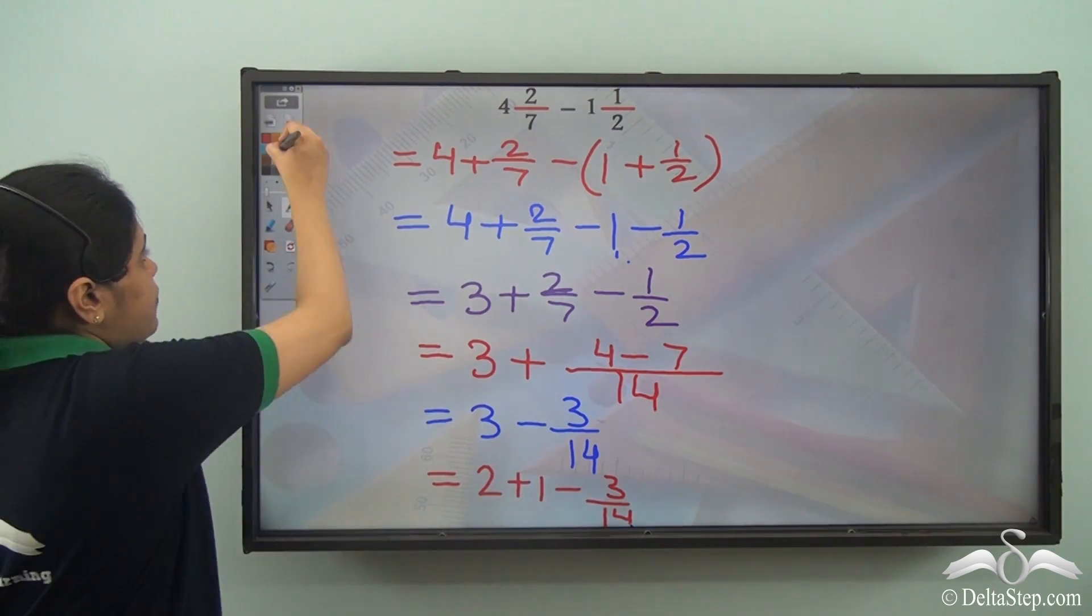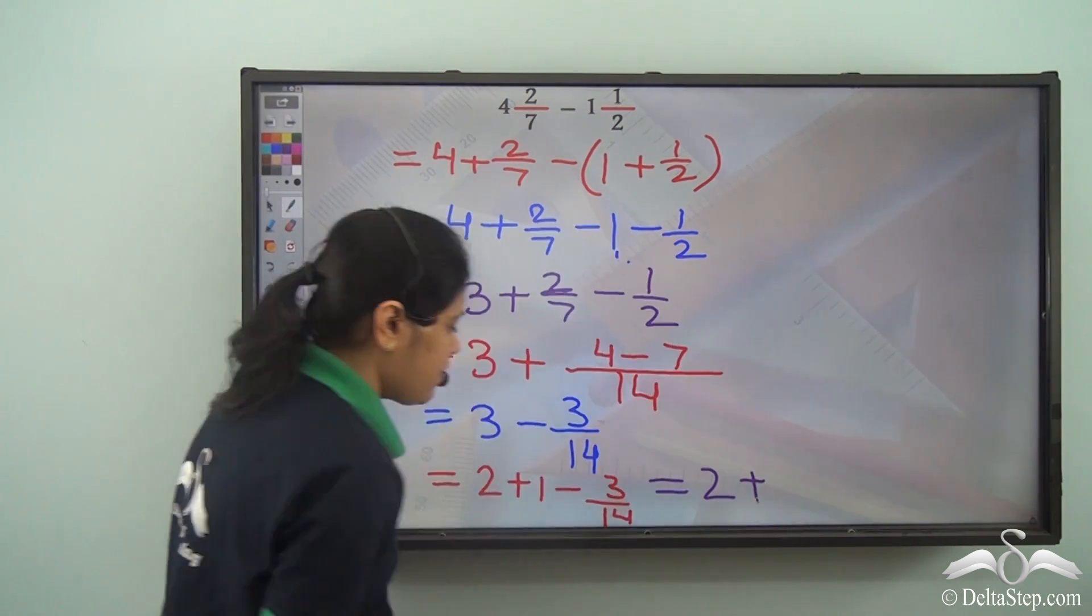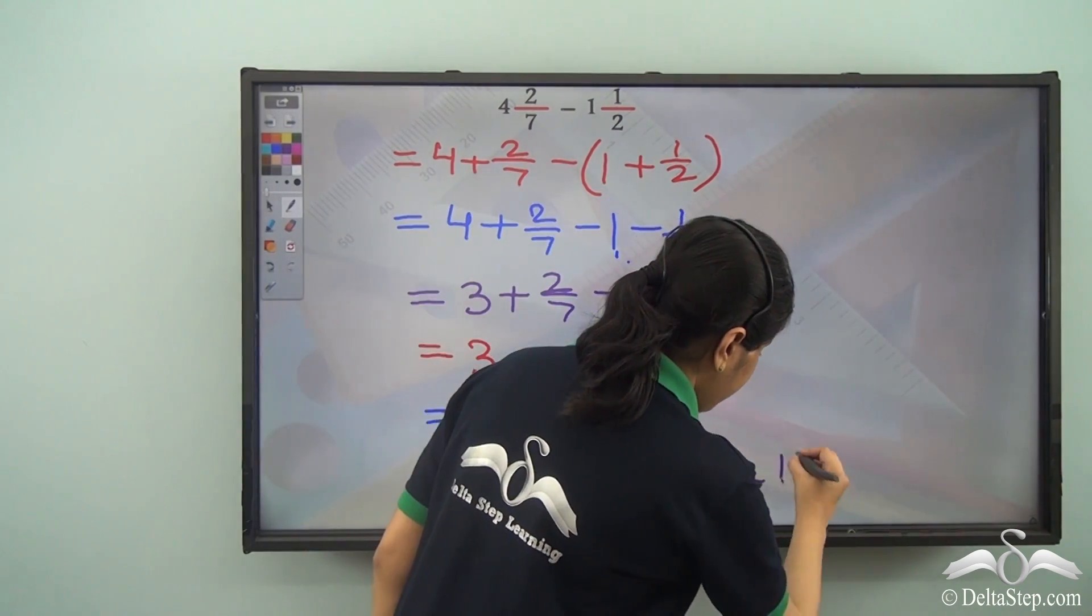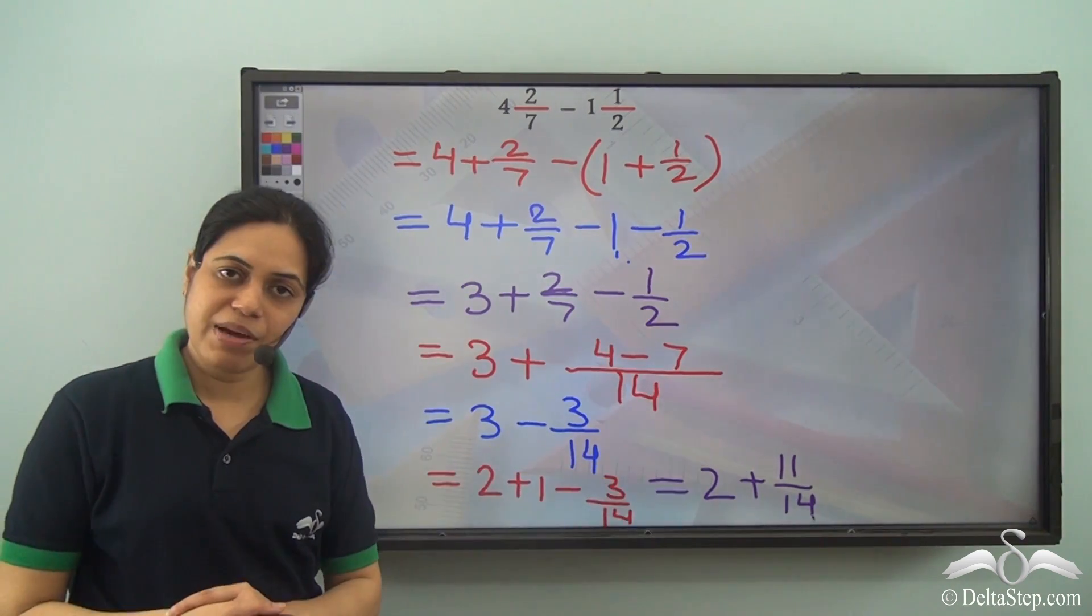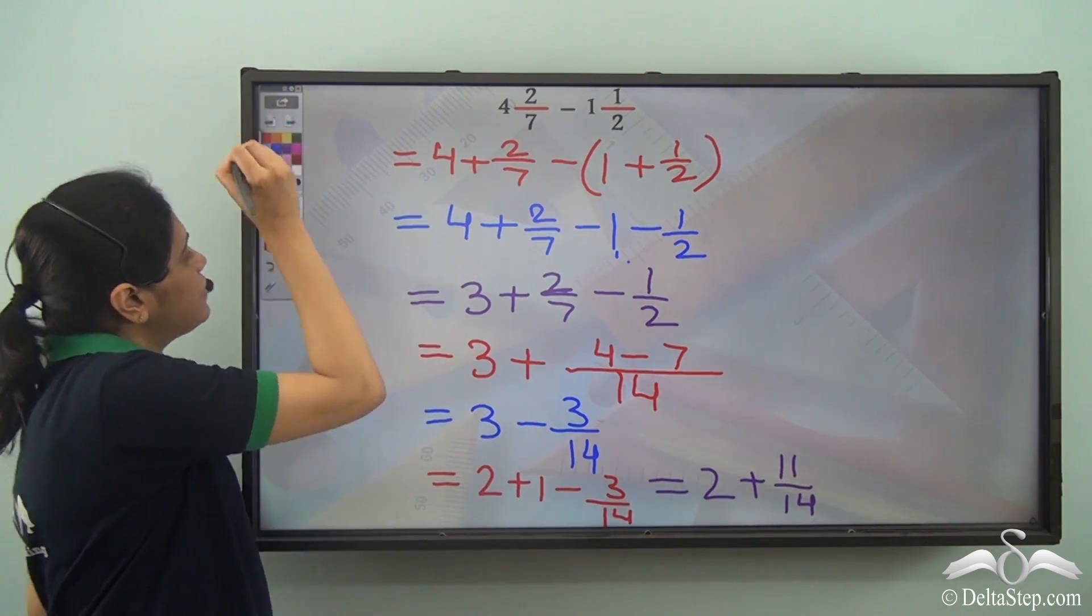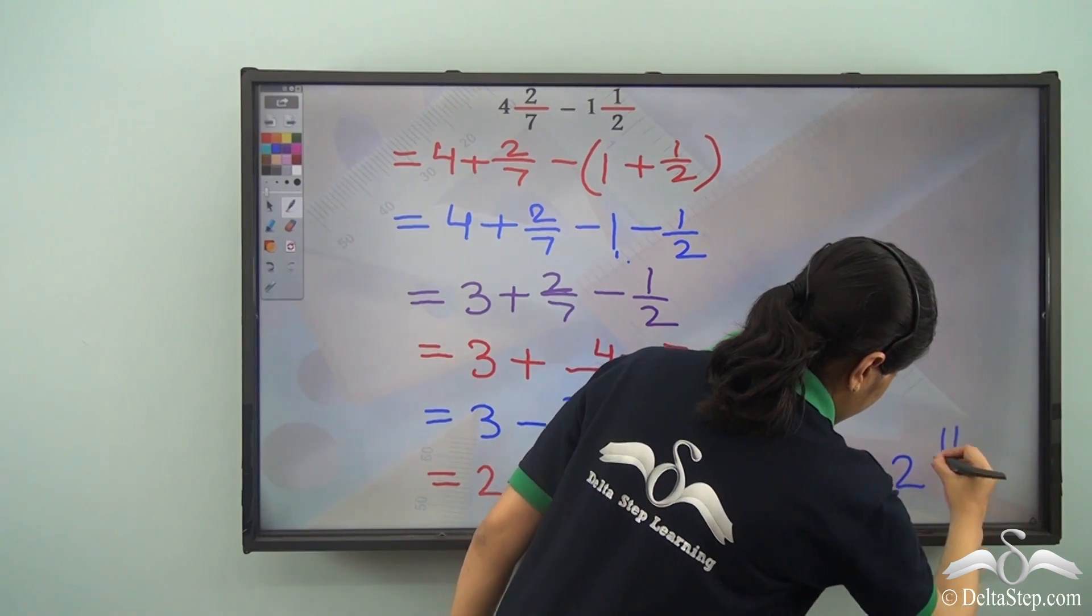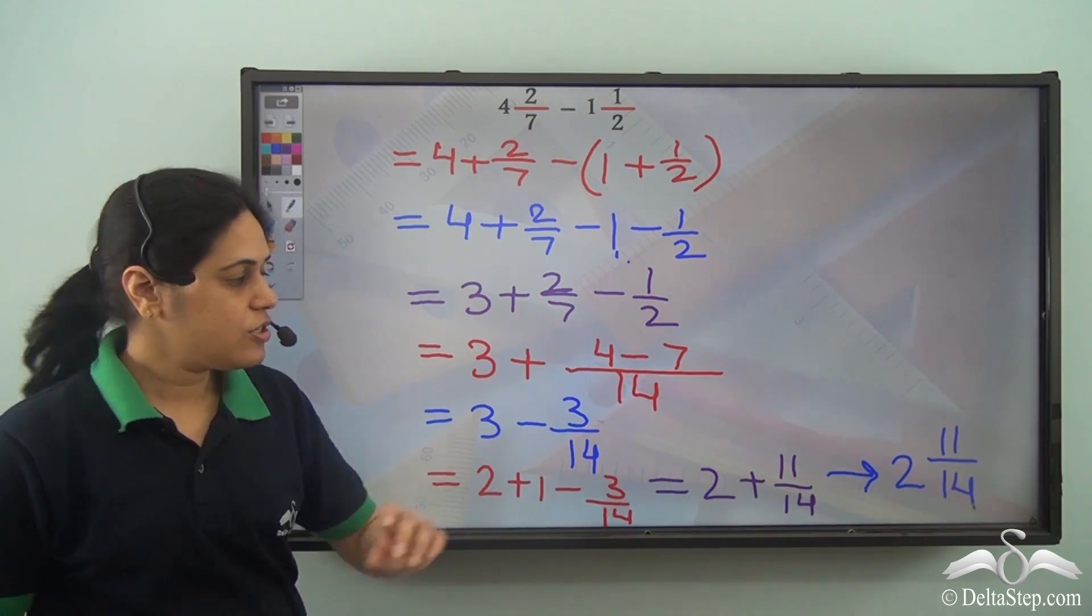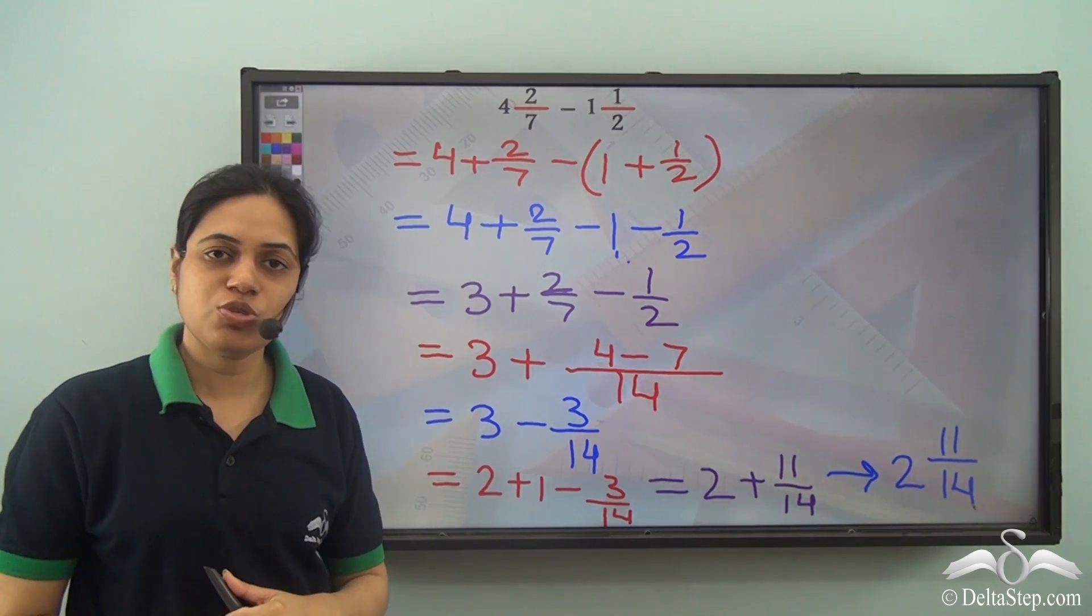Now 1 minus 3 by 14 gives us 11 by 14. So I have 2 plus 11 by 14. Now what is 2 plus 11 by 14? 2 plus 11 by 14. So this is a mixed fraction. This is the answer when we subtract these two mixed fractions.